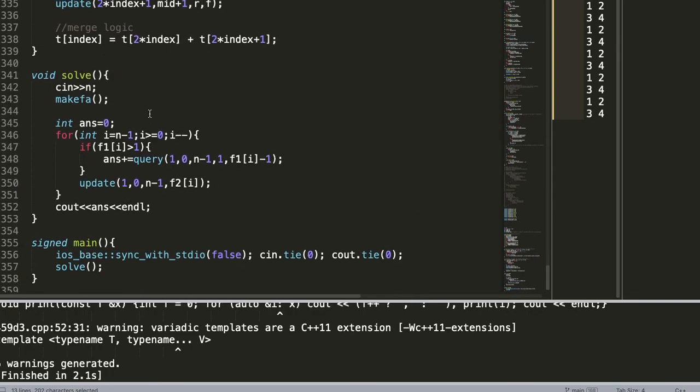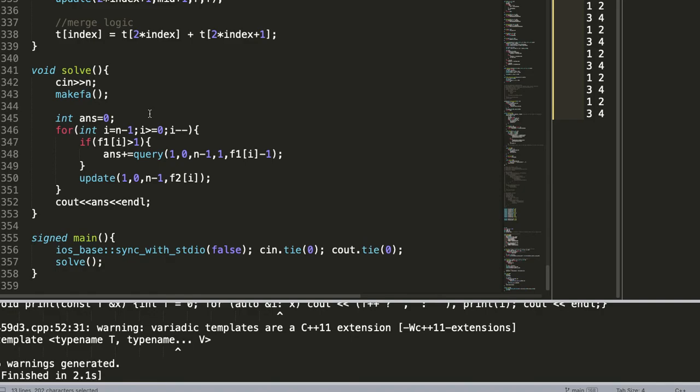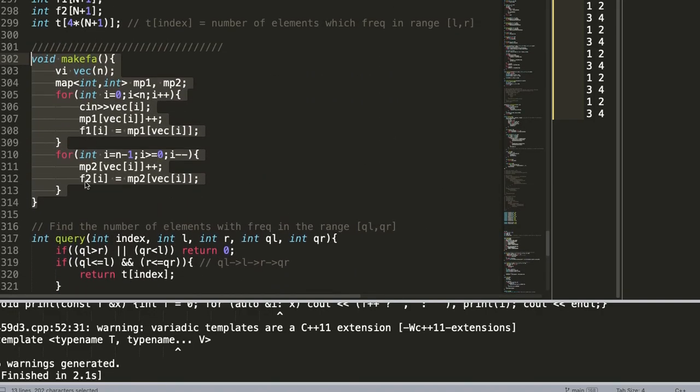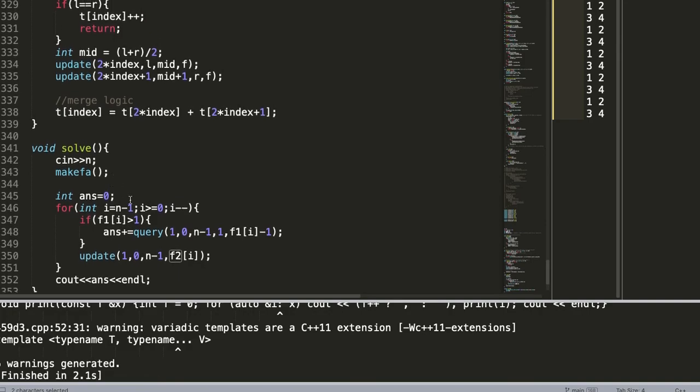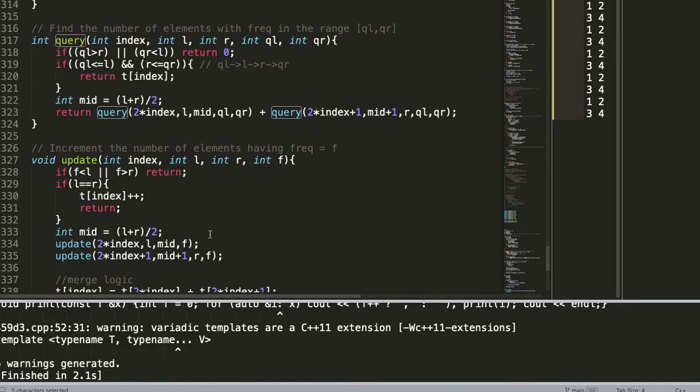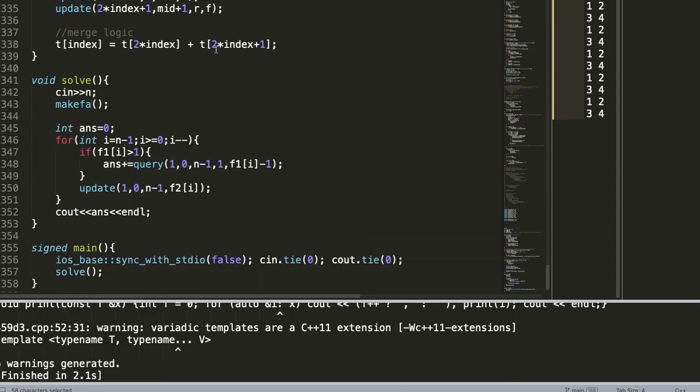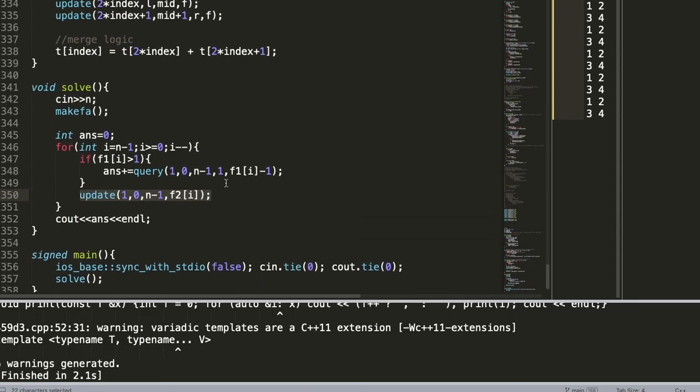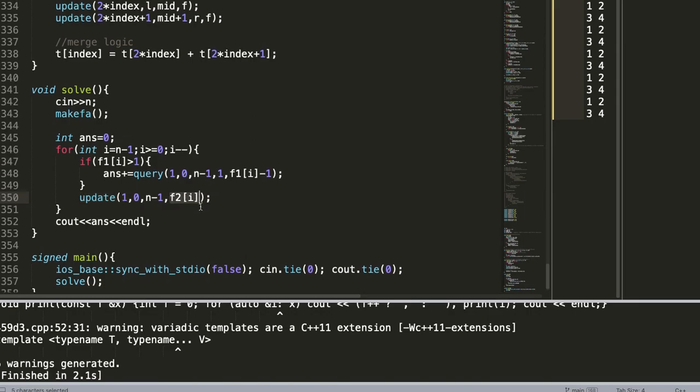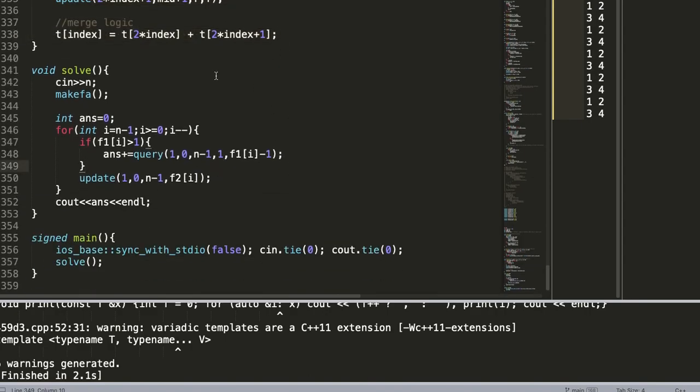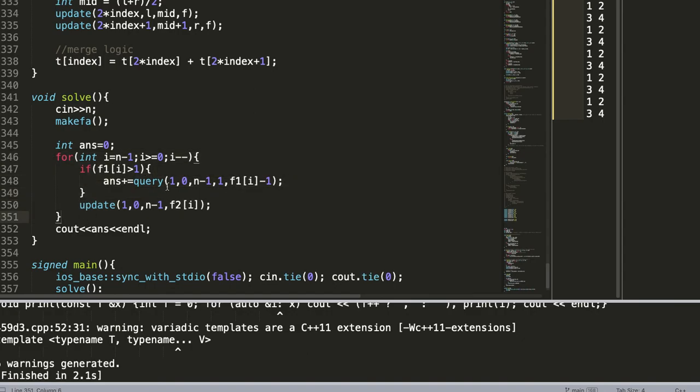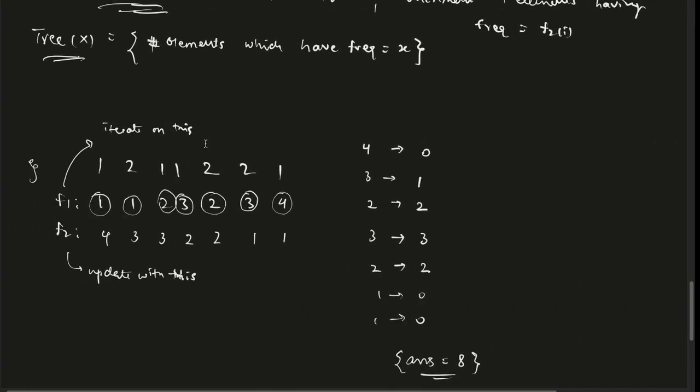So I'm hoping this implementation is cleared. Now moving on to the segment tree implementation. Again we are making the arrays f1 f2. In this function query, we are answering the number of elements with frequency in the range ql to qr. Once we have answered this, we want to update the segment tree such that we are incrementing the number of elements which have frequency equal to f2i. And we do it as follows, and then continue doing this for i equals n minus 1 to 0.